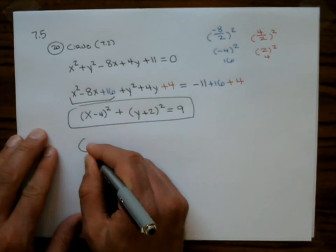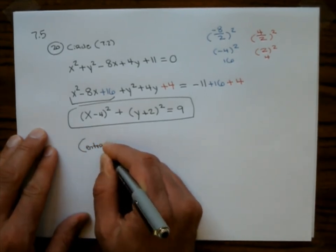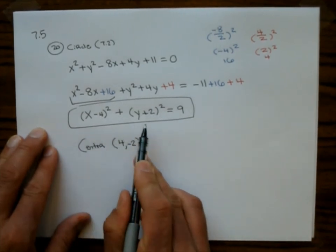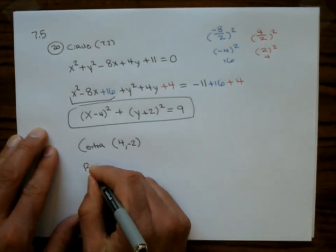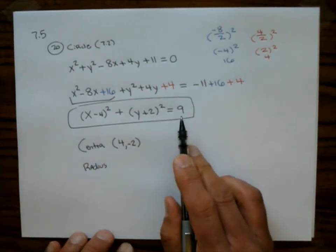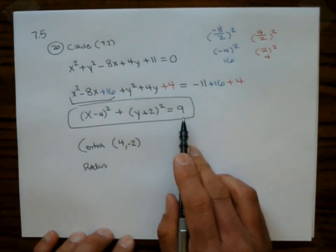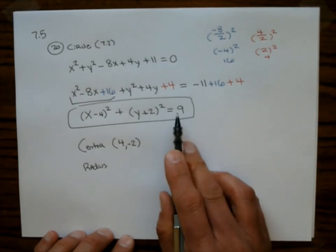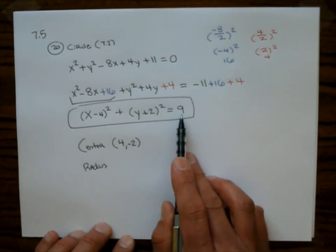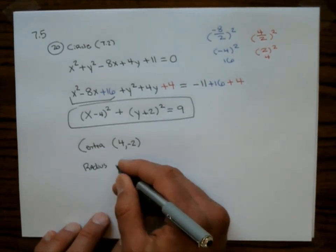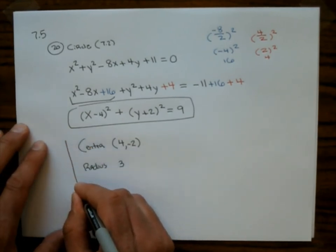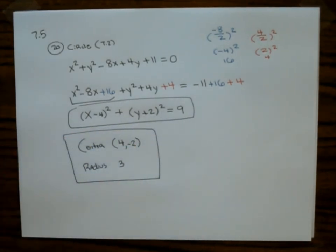The standard form is (x minus 4) squared plus (y plus 2) squared equals 9. The center is (4, negative 2). Many people mistake 9 for the radius, but since r squared equals 9, the radius is 3.